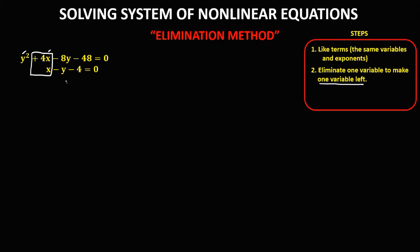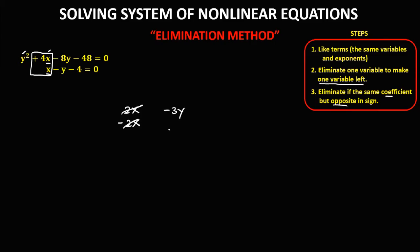Therefore, in this case, we need to eliminate x. We can only eliminate a variable if it has the same coefficient but opposite in sign. For example, if one term is 2x, the other must be negative 2x. If one is negative 3y, the other must be positive 3y. Or if one is x, the other must be negative x.